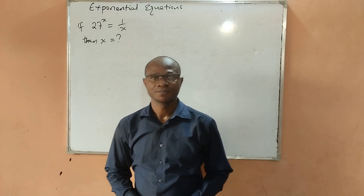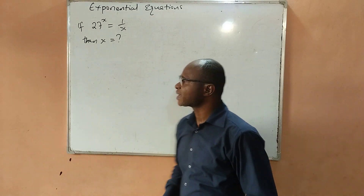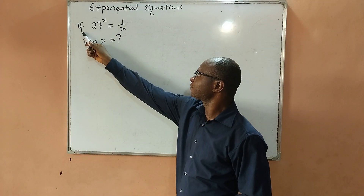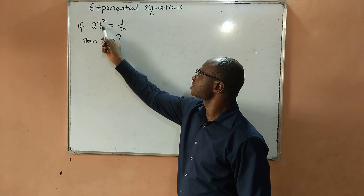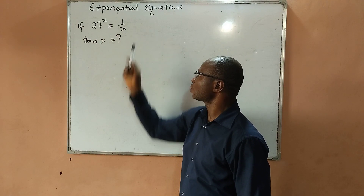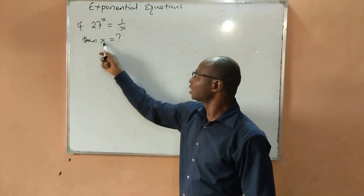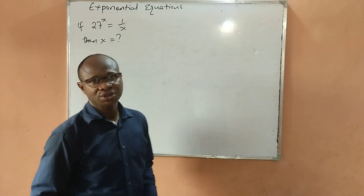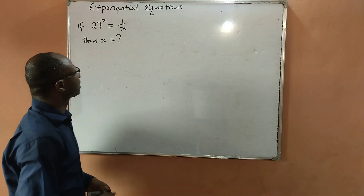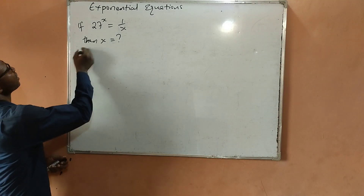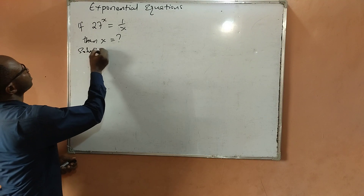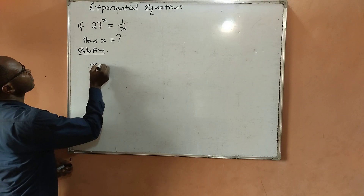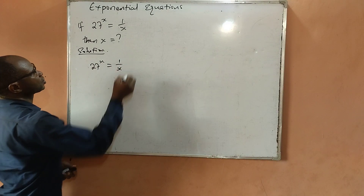Hello, welcome viewers. Today's math problem: we are given an exponential equation. If 27 raised to the power x is equal to 1 over x, then what is the value of x? We are given that 27 raised to power x is equal to 1 over x.